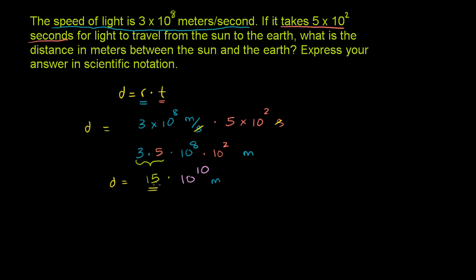Well, what's 15? 15 is the same thing as 1.5 times 10. Right? That's the exact same thing as 15. So we could write 15 as 1.5 times 10. And then it's going to be that times 10 to the 10th, times 10 to the 10th power.